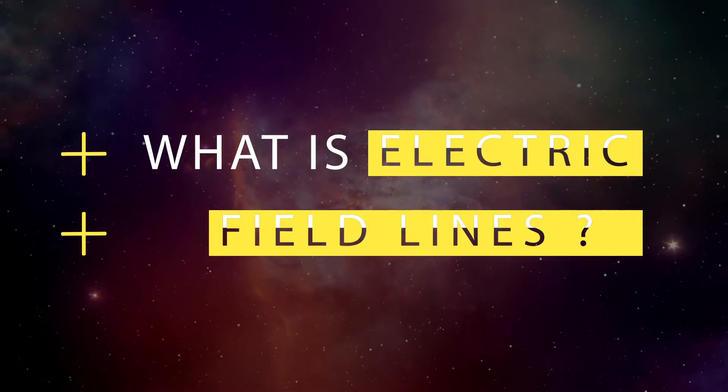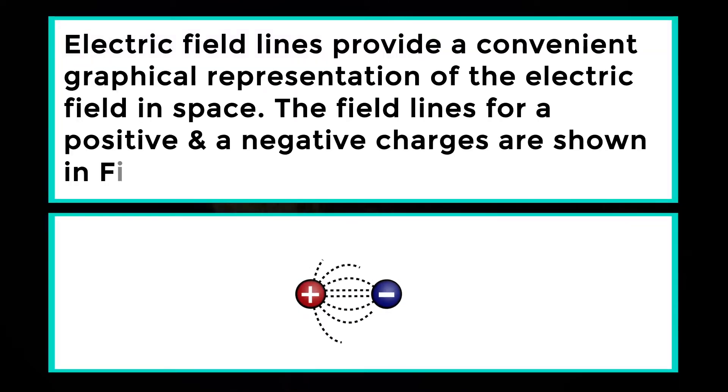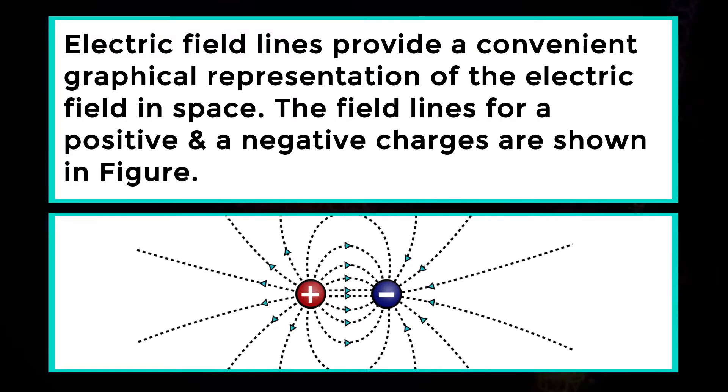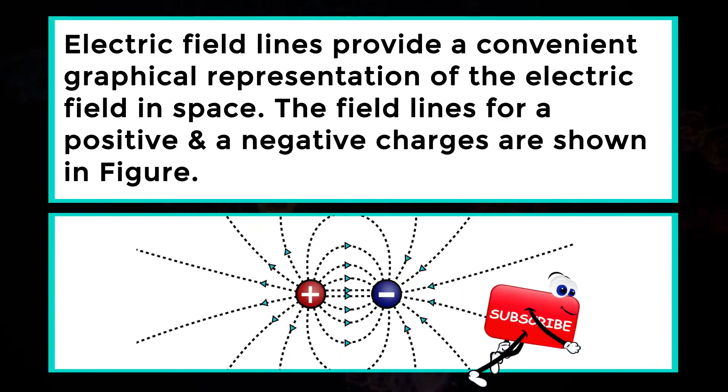What is Electric Field Lines? Electric field lines provide a convenient graphical representation of the electric field in space. The field lines for positive and negative charges are shown here.